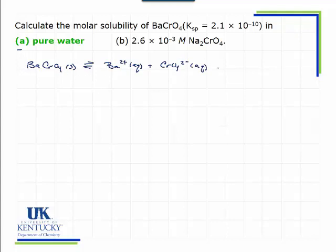So this equilibrium will occur, and when it does and reaches equilibrium, we know that Ksp would be the barium concentration times the chromate concentration.